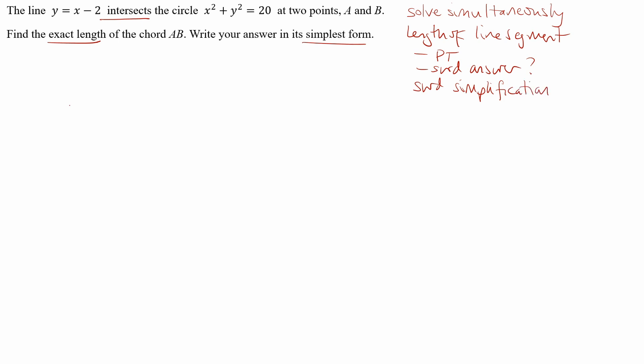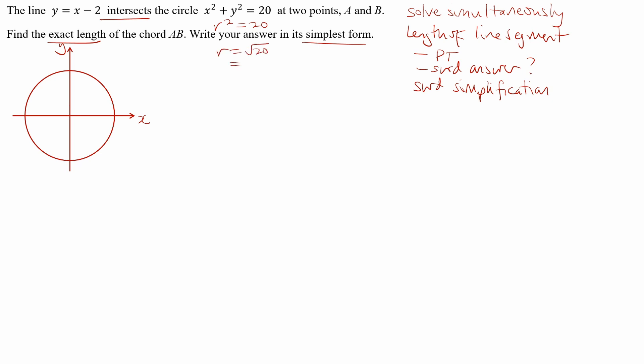Drawing some axes: the circle x squared plus y squared equals 20 is centred at the origin with radius equal to the square root of 20. This is of the form x squared plus y squared equals r squared, so r squared equals 20, meaning r equals root 20, which simplifies to root 4 times root 5, which is 2 root 5. The numerical value is between 4 and 5, since r squared is between 16 and 25.